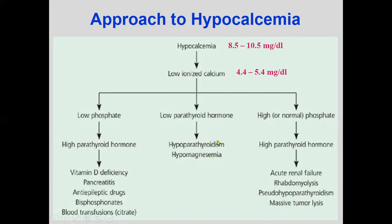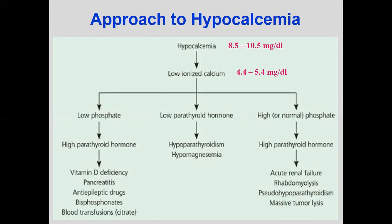If PTH is low, then hypoparathyroidism and hypomagnesemia should be considered. If calcium is low, phosphate is high, and PTH is high, then consider acute renal failure, rhabdomyolysis, pseudo-hypoparathyroidism, and massive tumor lysis syndrome — a condition involving death of skeletal muscle leading to hyperphosphatemia, hypocalcemia, and hyperuricemia with possible kidney involvement.